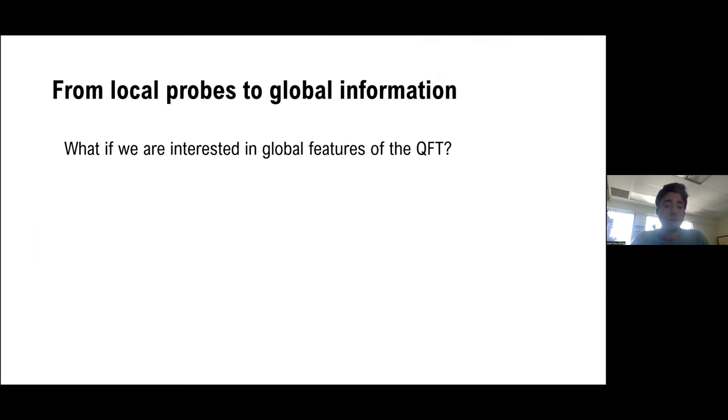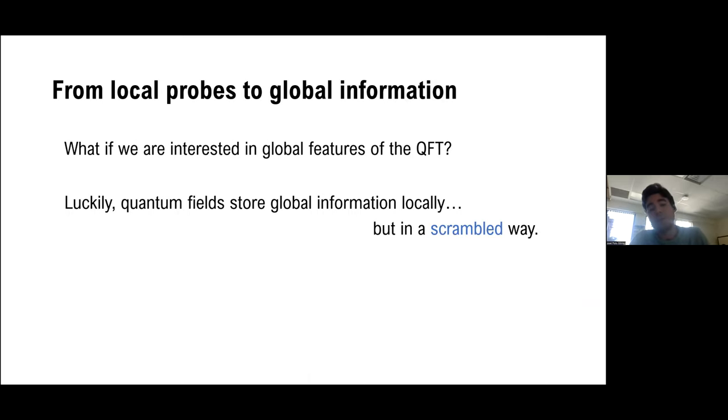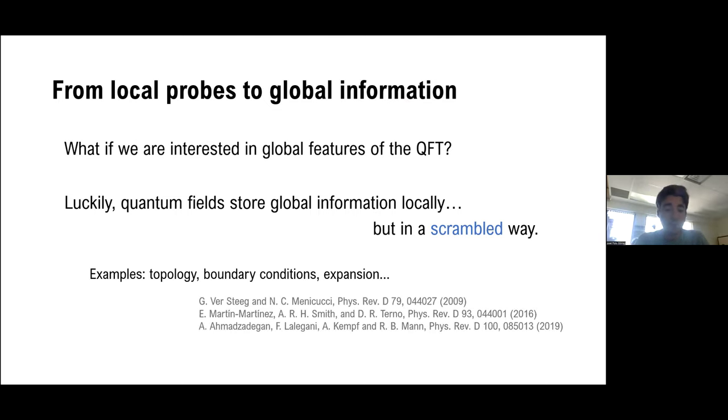Well, at least for the second question, we are lucky enough that quantum fields, when in equilibrium with their environments in the background, store global information locally, but they do it in a scrambled way. This means that there is not a local observable that we can measure and tell us that there are like three holes in spacetime, but at least we know that the spacetime having three or four holes is going to affect the results of our local measurements. This is well understood, and for example we know that by looking at local measurements we can tell things about the topology or the boundary conditions of the spacetime.